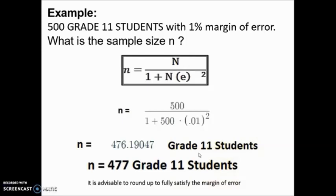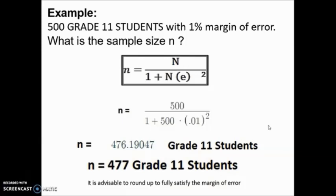Many students have been asking why we round up. The reason is that any decimal here constitutes a person, so we must make it a whole number even if it is less than 0.5. I know this is contrary to the usual rounding rules, but in sampling it is always advisable to round up because any decimal point constitutes one person.